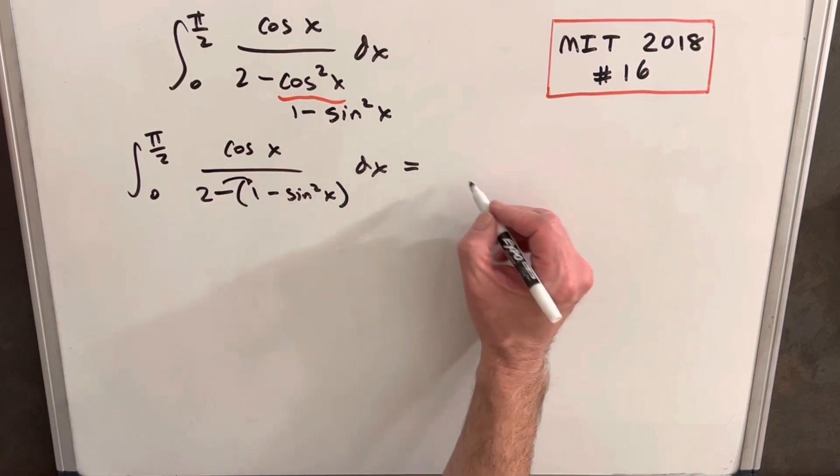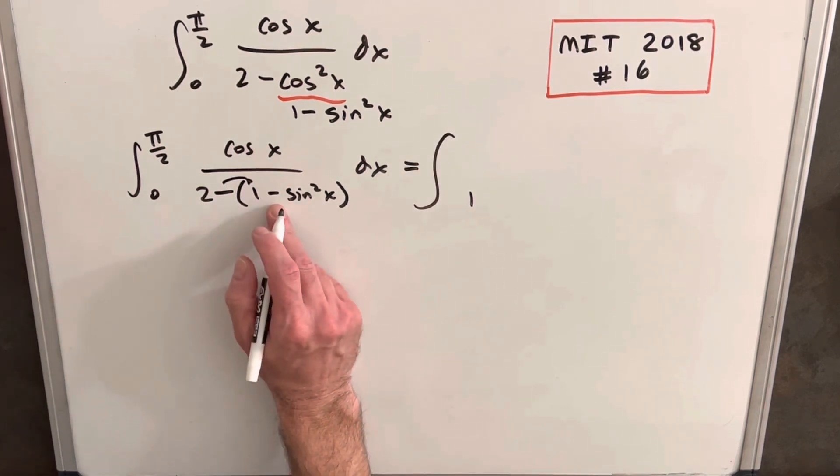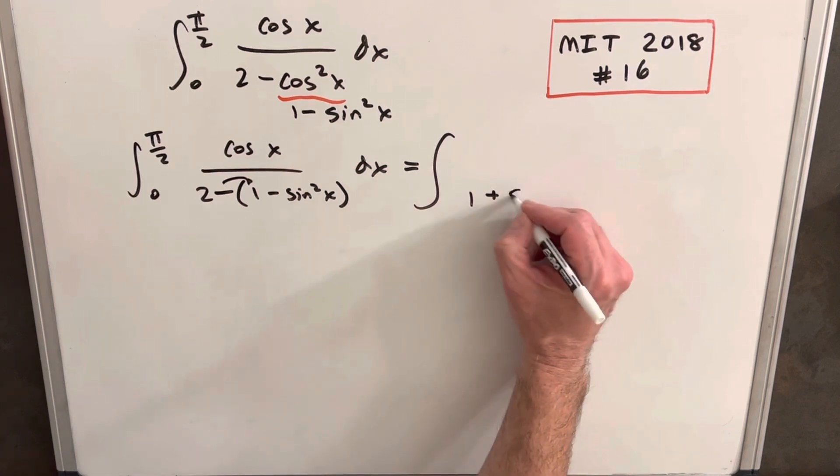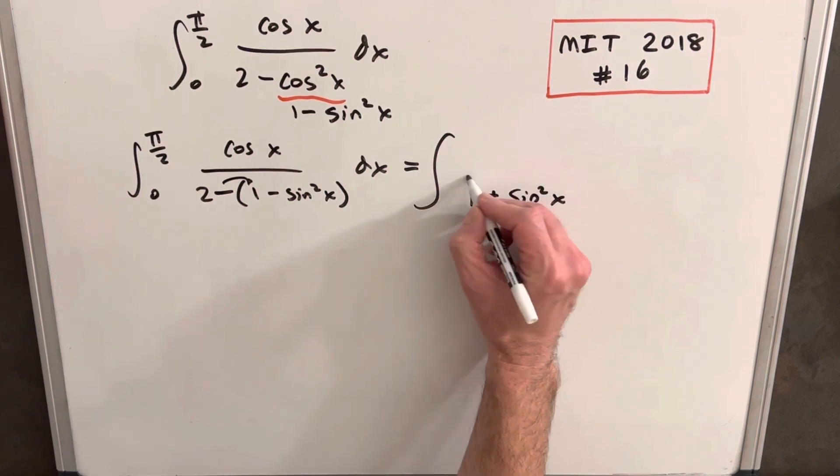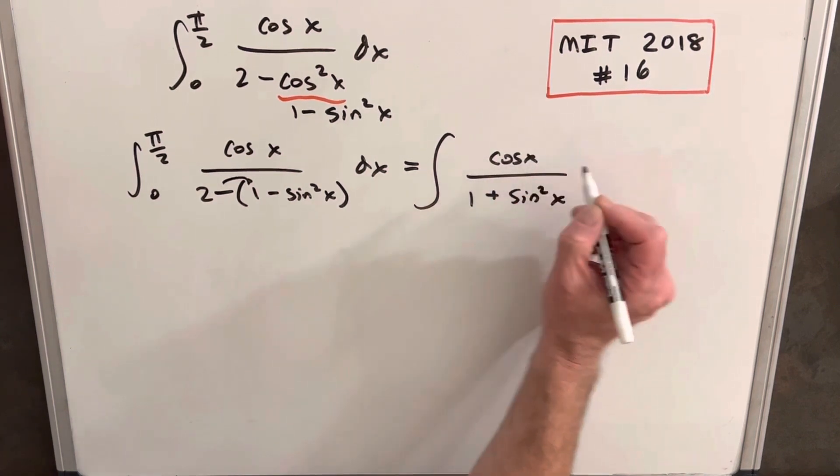we're going to have 2 minus 1 is 1, so we're going to have 1 and then this is going to be a plus sine squared x, cos x, dx.